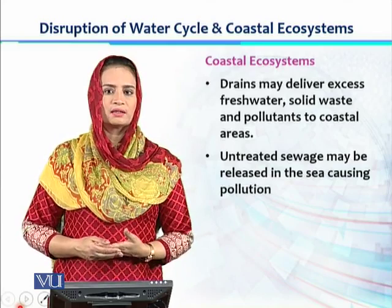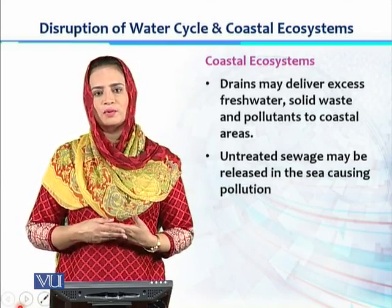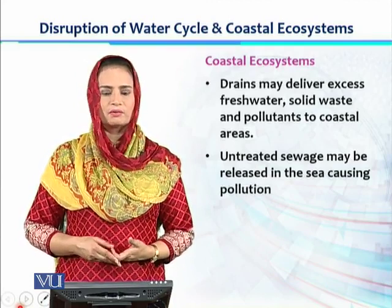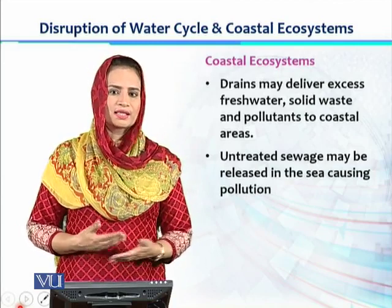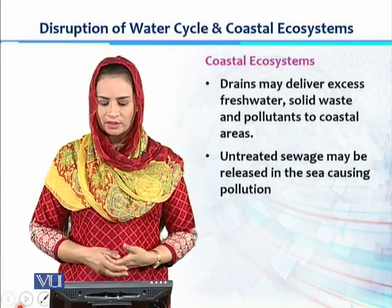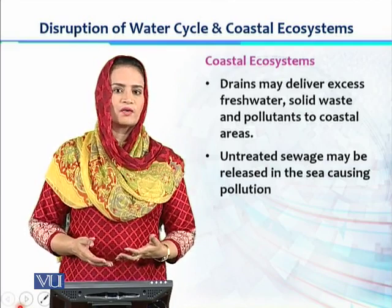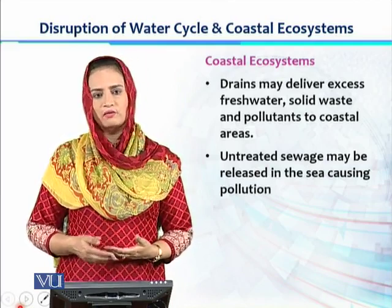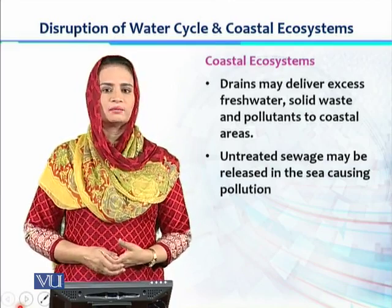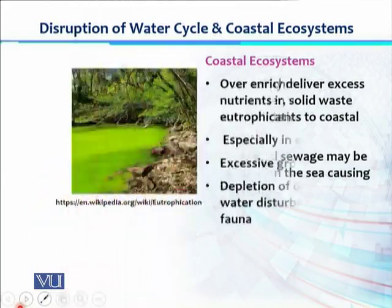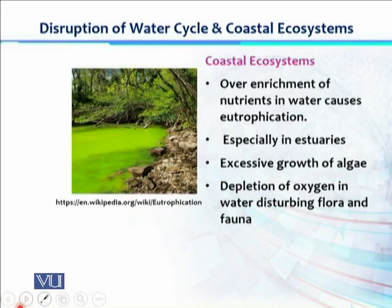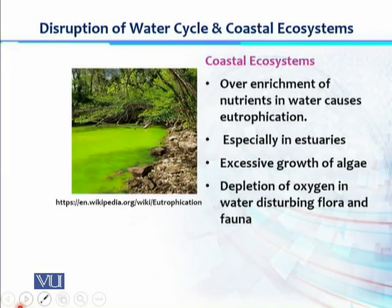Drains are dumping liquid waste, solid waste, and plastic waste — everything is being dumped in the sea. Mostly without recycling, everything is dumped in seas or coastal areas. Untreated sewage from different human communities and domestic sources is released into the sea, resulting in serious pollution of water bodies. One major impact of coastal ecosystem damage is over-enrichment: dumping industrial and municipal waste causes nutrients to increase, which is very favorable for algal growth, resulting in overwhelming algal blooms.